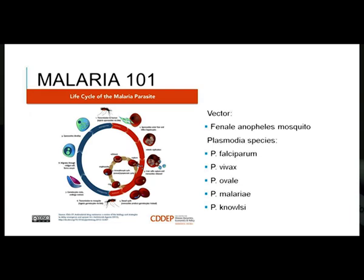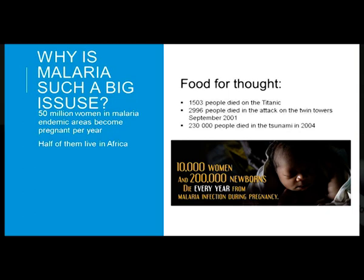Plasmodium vivax is the most common species but doesn't cause severe disease. Plasmodium ovale and malariae are less common and don't cause severe disease. Plasmodium knowlesi will cause severe disease but is very rare in pregnancy. It's important to note that Plasmodium vivax and ovale can be dormant in the liver and cause relapse months and years later after infection.